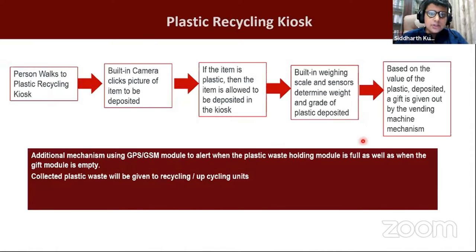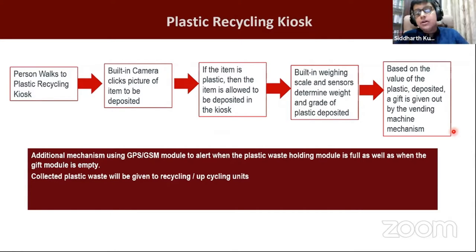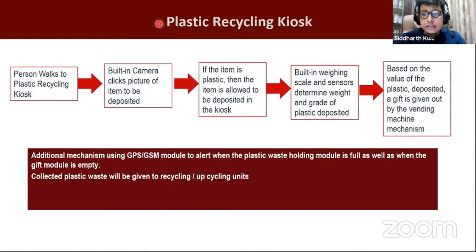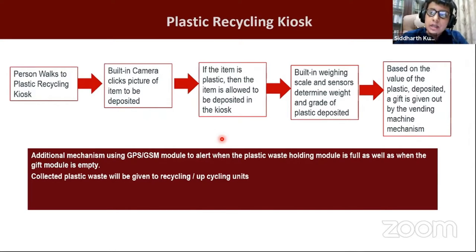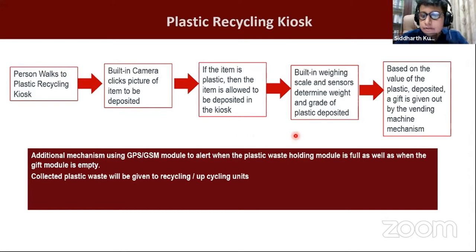Here's how the project works: a person walks to the plastic recycling kiosk and a built-in camera takes a picture of the item to be deposited. If the item is plastic, it is allowed to be deposited. Using AI programs we've learned about, we can feed the computer a variety of images and teach it to identify plastic from non-plastic. This preliminary identification check determines whether the item is plastic. If the AI confirms it is plastic, the depositing box opens and the person inserts the plastic waste. Built-in weighing scales and sensors then determine the weight and quality of the deposited plastics.